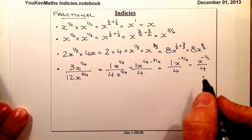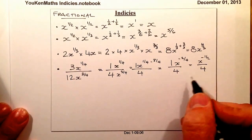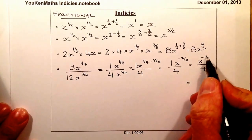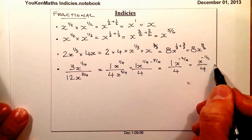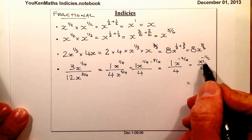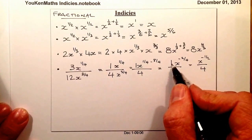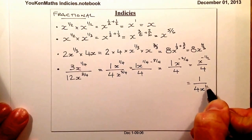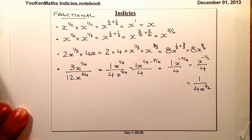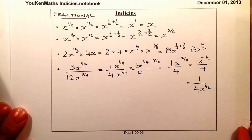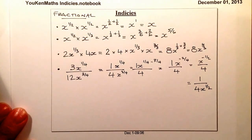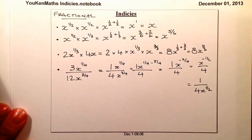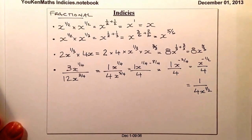If we need to write the answer with a positive index, we move the x to the minus half down to the denominator. Remember there was still a 1 on top. So the final answer written with a positive index is 1 over 4x to the power of a half. That's a look at fractions as indices — the normal rules of fractions apply when adding and subtracting, so you need to be good at that for fractional indices.